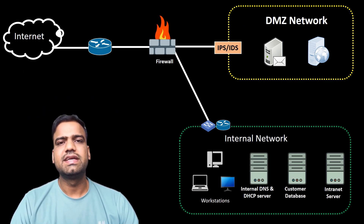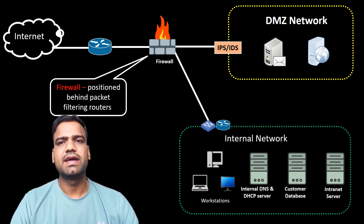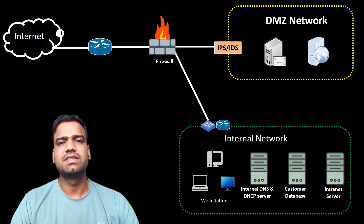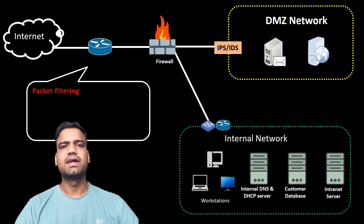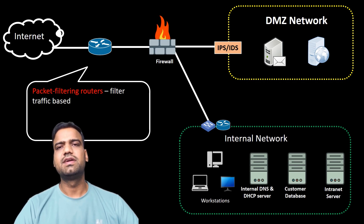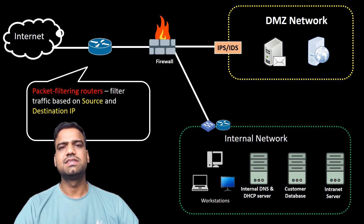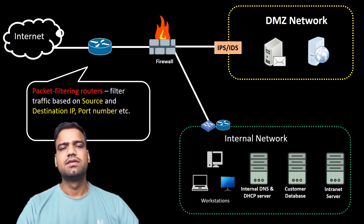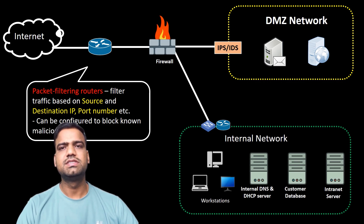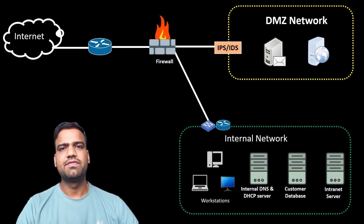Firewalls in the DMZ are positioned behind packet filtering routers to pre-screen incoming traffic, blocking obvious threats before they reach the internal network. Packet filtering routers are used to filter traffic based on source and destination IP addresses, port numbers, and other criteria. They can be configured to block traffic that is known to be malicious, such as traffic from known bad actors or traffic attempting to exploit known vulnerabilities.